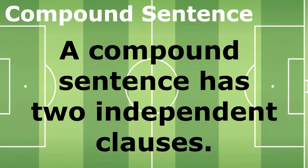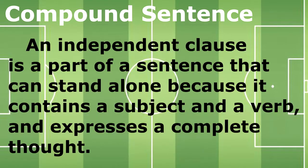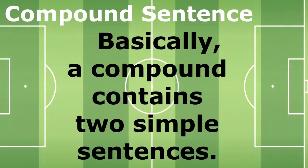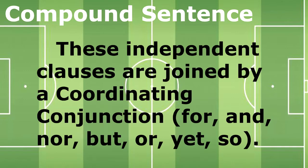Next, a compound sentence has two independent clauses. An independent clause is a part of a sentence that can stand alone because it contains a subject and a verb and expresses a complete thought. Basically, a compound sentence contains two simple sentences. These independent clauses are joined by a coordinating conjunction, like for, and, nor, but, or, yet, and so. We'll discuss deeper about coordinating conjunctions in our succeeding lessons.